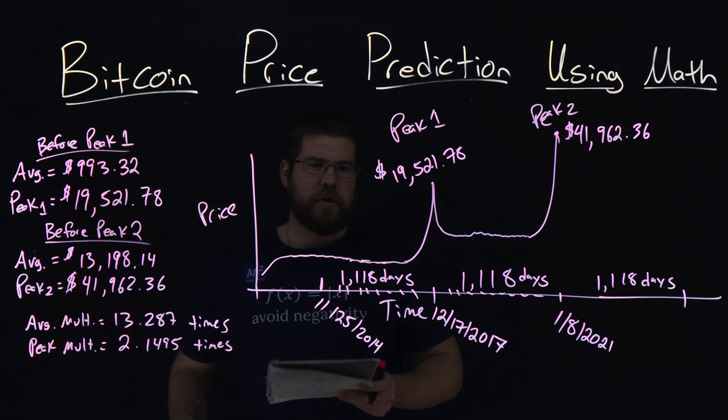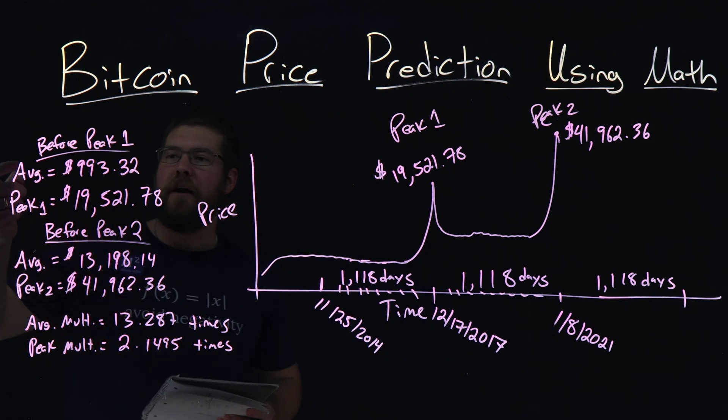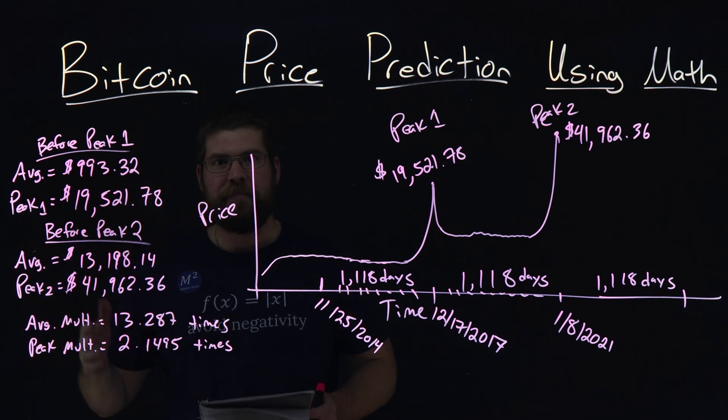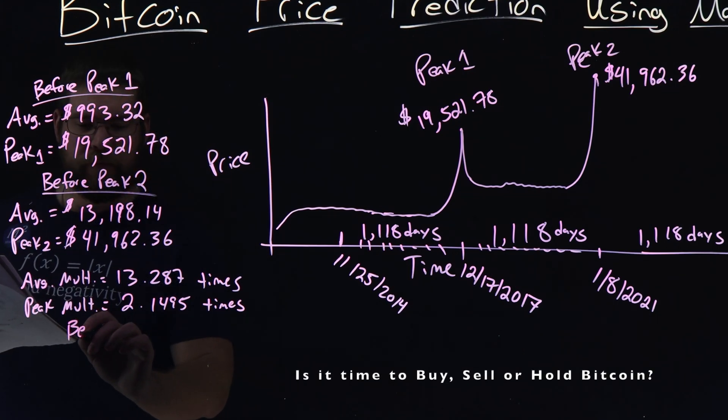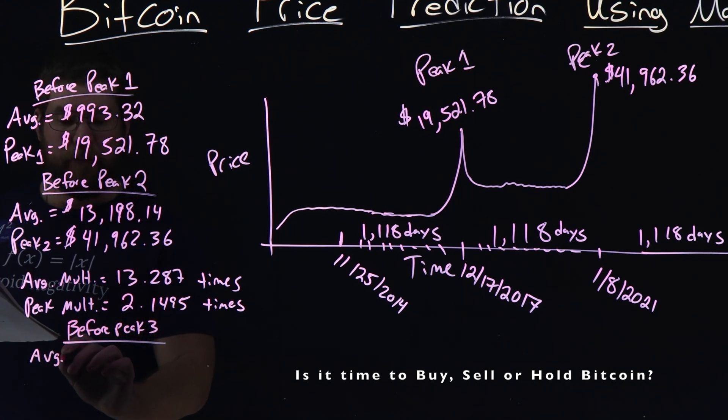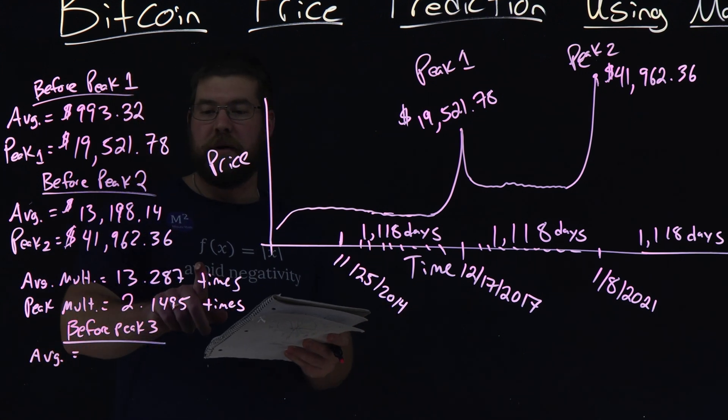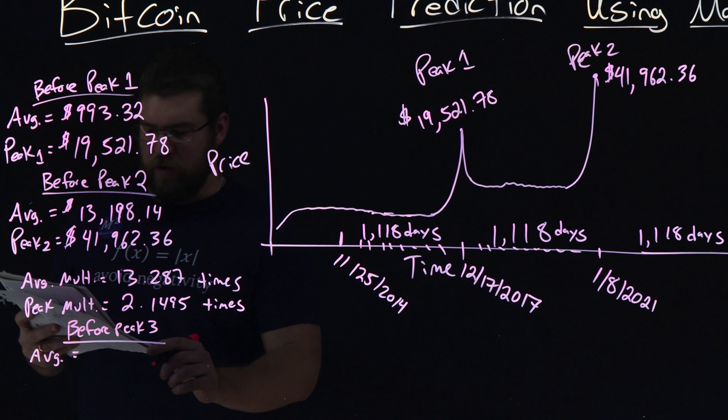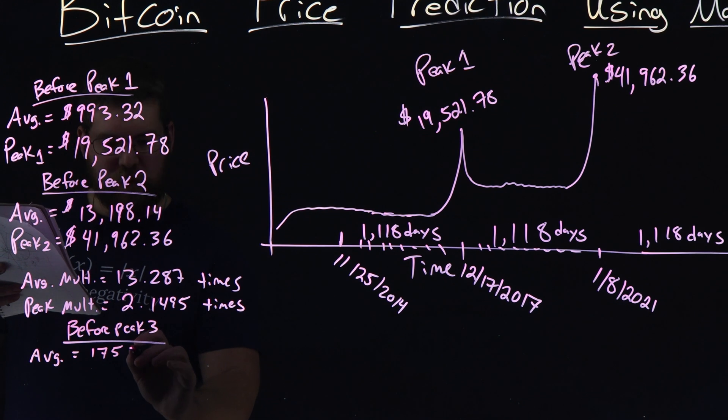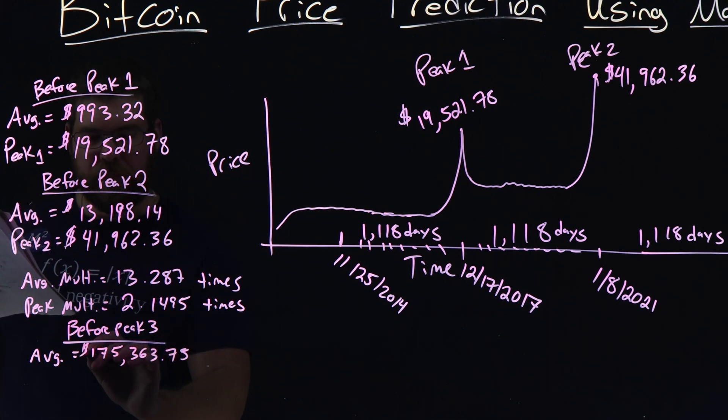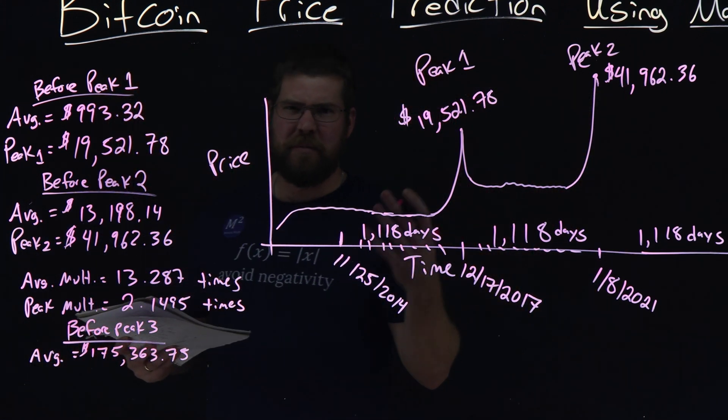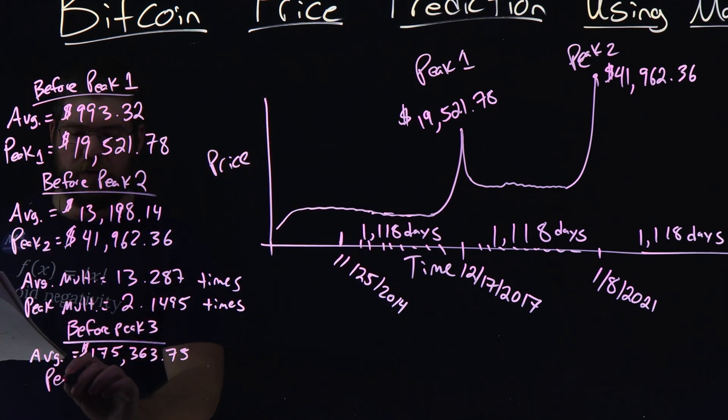So at first I was like, okay, let's go apply this for peak three. So we have a first average times 13.287, gave us the average for the second one, let's apply that for the third time. So before peak three, we would have an average then. If I multiply that out, if I took that 13.287, multiply it by 13,000, it gets a very large number. What did it come out to be? 175,363.75, roughly. Which really doesn't make sense, so that makes that average higher than peak two would have been, doesn't really follow the plan there.